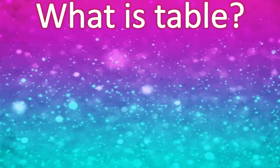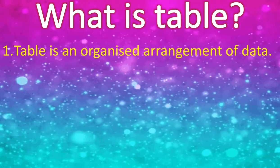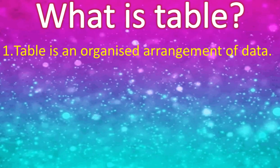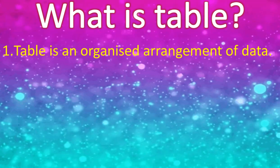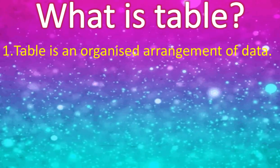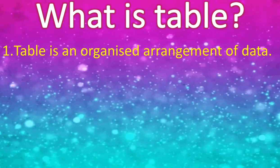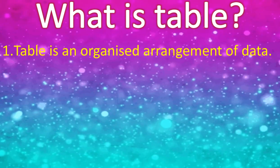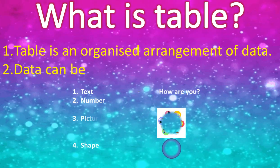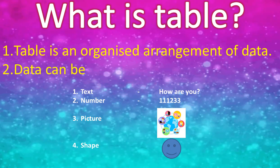We'll see what a table is. A table is an organized arrangement of data. What do we mean by organized? Organized means everything is in proper place so that it is easy to access or easy to search for any information.